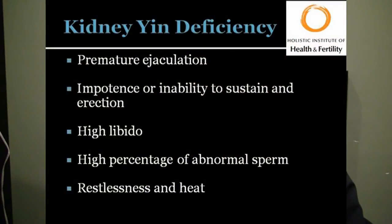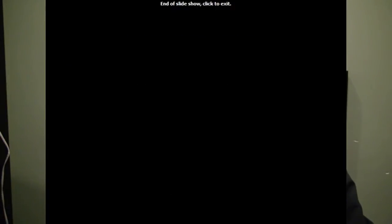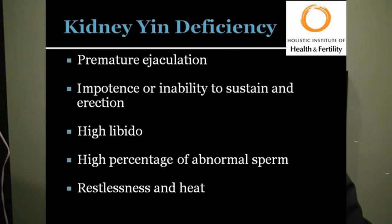The first diagnosis that we can make in Chinese medicine is kidney yin deficiency. This is usually caused by overwork and lots of stress, staying up late, not sleeping regular hours, and just working too much. Some of the symptoms with kidney yin deficiency are premature ejaculation, impotence or inability to sustain an erection, a very high libido, a high percentage of abnormal sperm, restlessness, and heat. The person seems agitated, very thirsty, or just has a lot of heat-type symptoms.